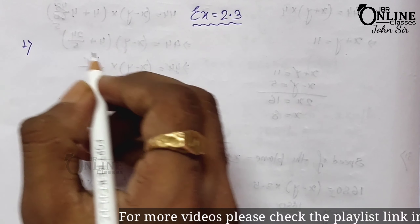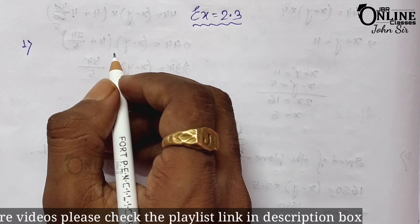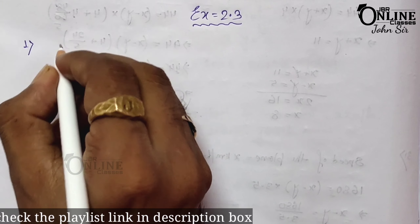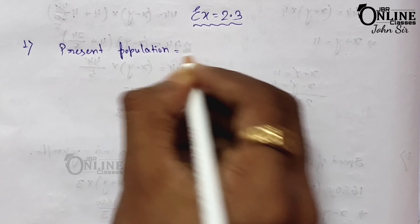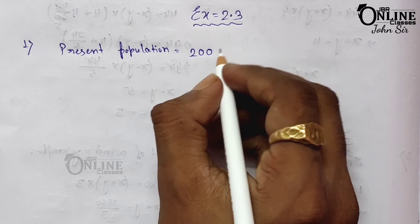In sum number one, the present population of a town is two lakh. So write down the present population equal to two lakh — five zeros will be there. Its population increased by 10 percent in the first year and 15 percent in the second year. After the first year, the population will be two lakh increased by 10 percent.